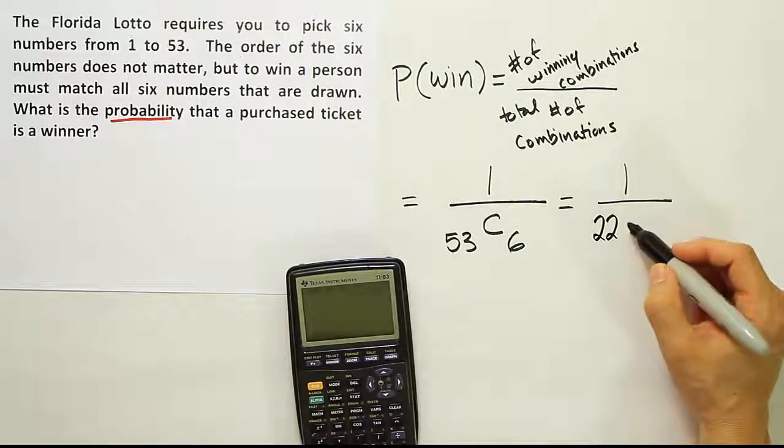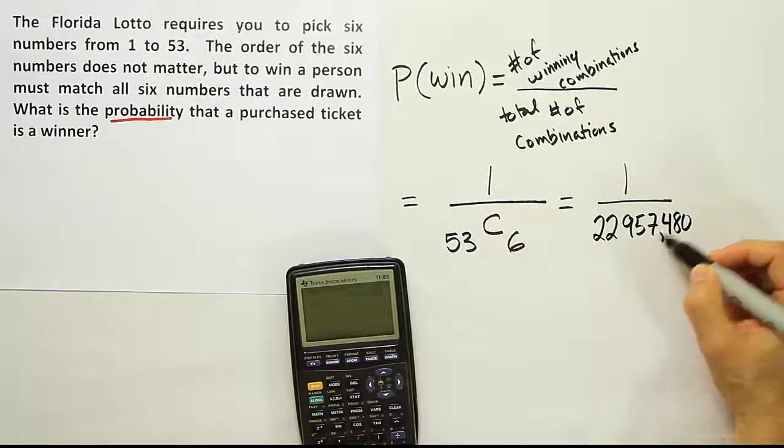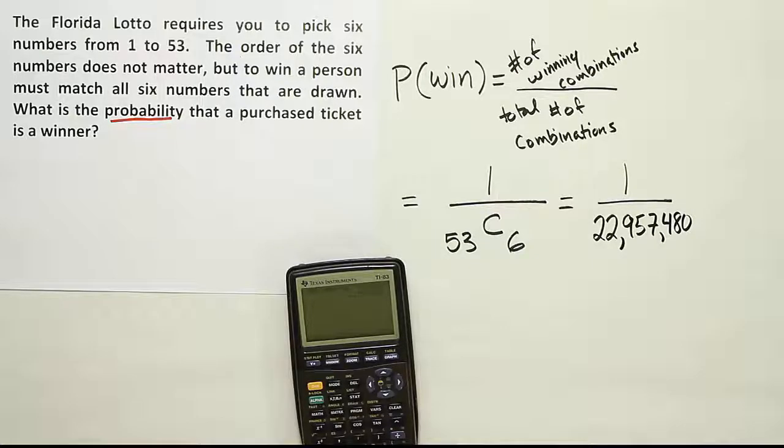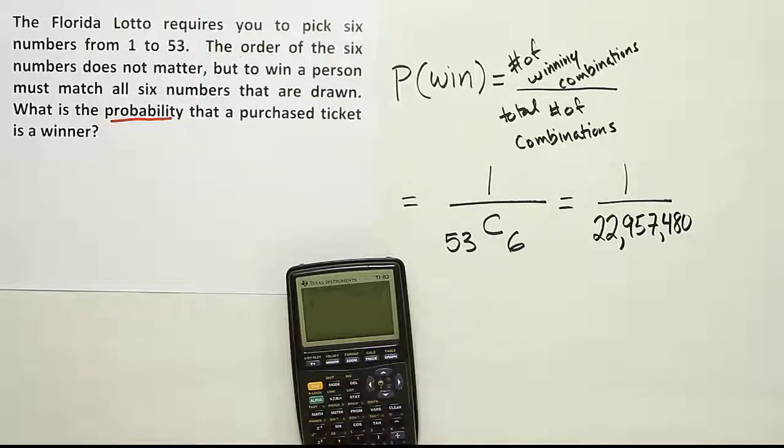It's like 22,957,480 unique combinations. And so the chance I win is one out of 22,957,480. Not very good odds. I'm probably far more likely to get struck in the head by lightning in the summer here in Florida than I am to win the lottery even once.